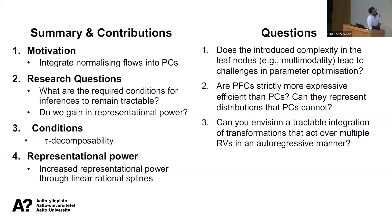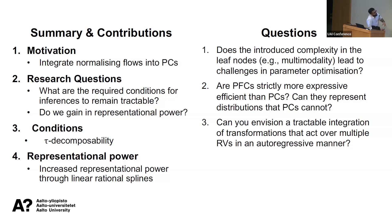Third question: can you envision tractable integration of transformations acting over more than one random variable? The key takeaway from tau-decomposability is that unlike normalizing flows which transform the entire space, in flow circuits you cannot do that while maintaining tractability — you are restricted to flows over leaf distributions. There may be cases where you only need tractability for a subset of variables, in which case flows over multiple variables could be defined. But if you want full tractability and model flows over multiple random variables, that would be more challenging — there's no free lunch, though it would be interesting to explore.